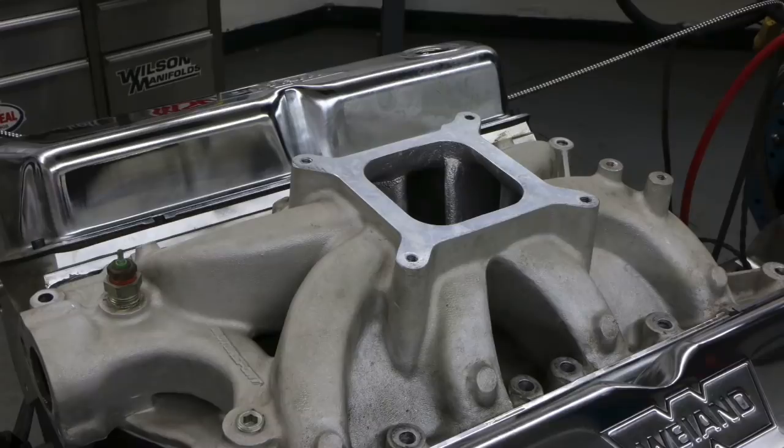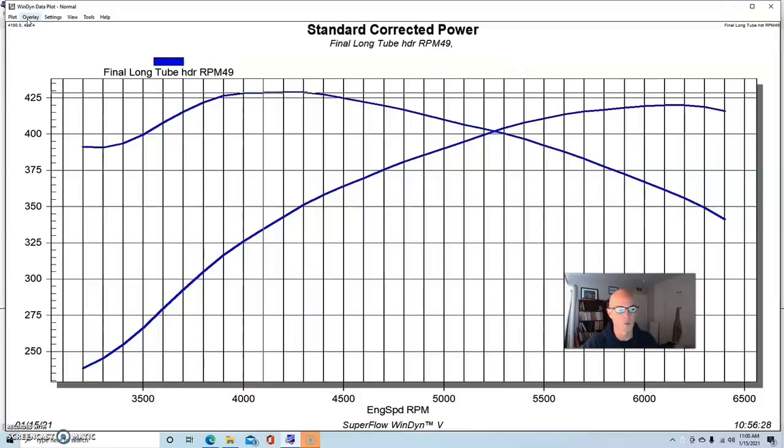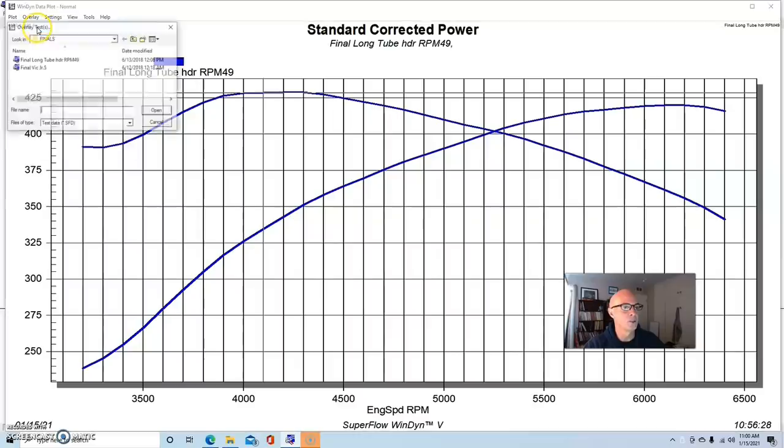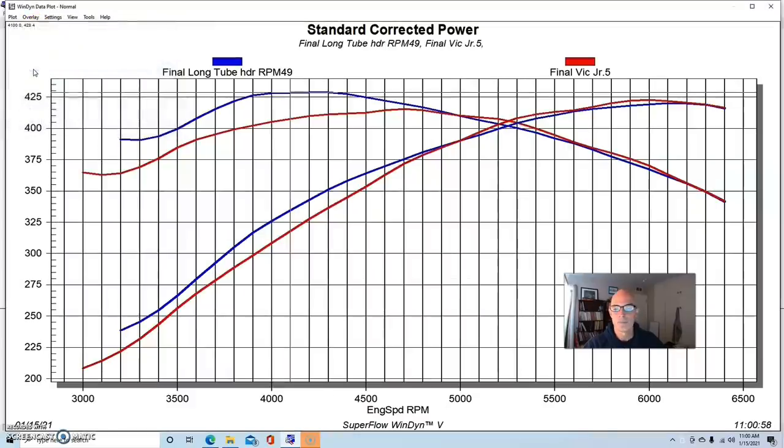In this case, the single plane was an Edelbrock Victor Jr. intake, very common for a 351 or a 302, very common single plane used an awful lot. And here is our single plane. And what we typically see on single plane and dual plane comparisons is the single plane will make more power at the top, the dual plane will make more power at the bottom, and then the combination kind of determines where that crossover is.